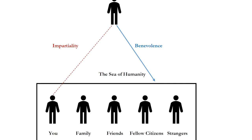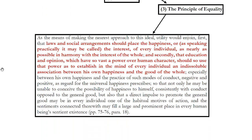So Mill admits that this is not an easy standpoint to adopt. And of course, what is the remedy? In order to fully have the principle of equality be part of our collective human psychology and the way in which human beings tend to view the world, he thinks we would need changes to our laws and social arrangements. He says: utility would enjoin first that laws and social arrangements should place the happiness, or speaking practically the interest, of every individual as nearly as possible in harmony with the interest of the whole.